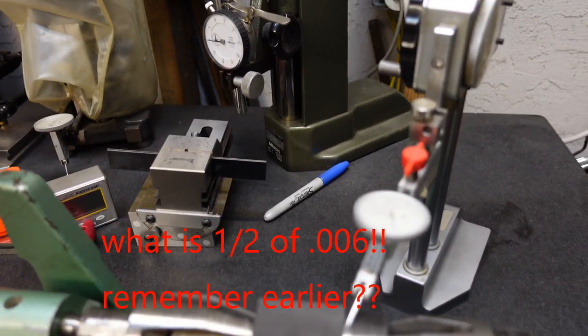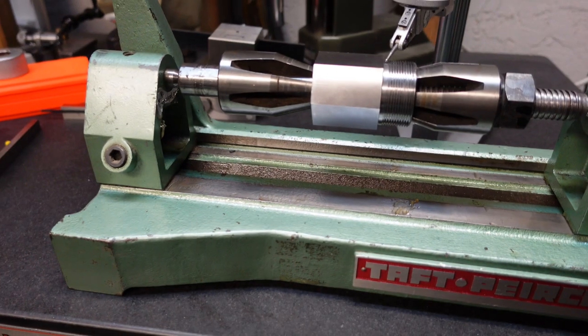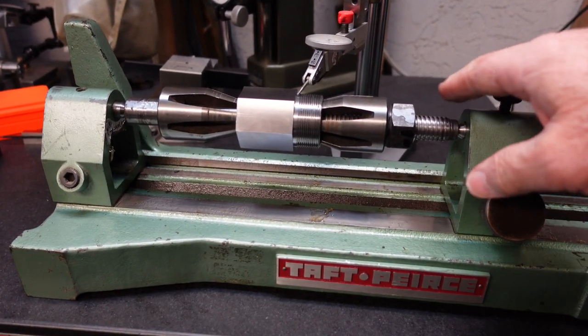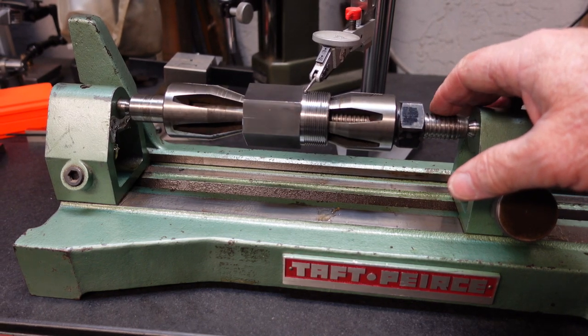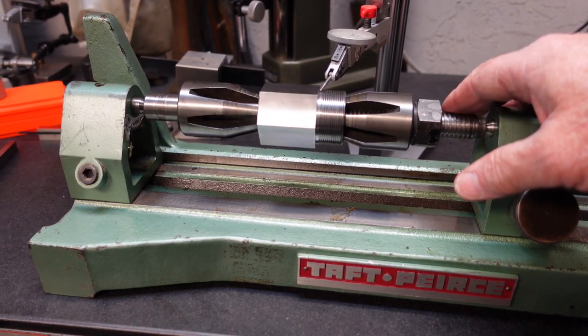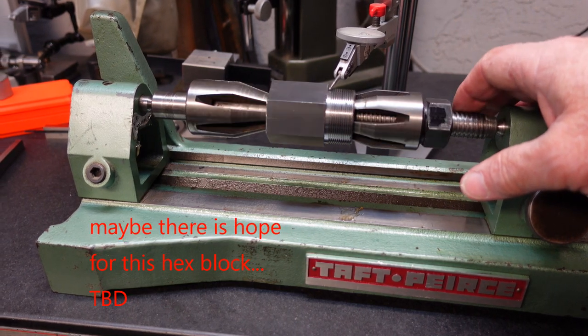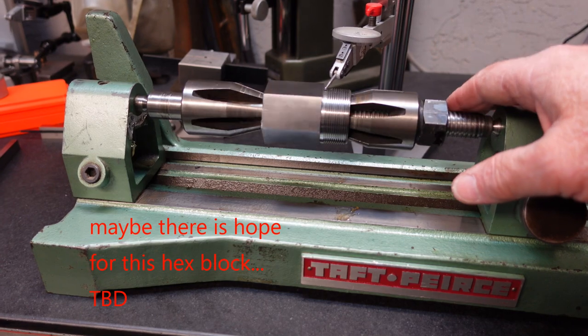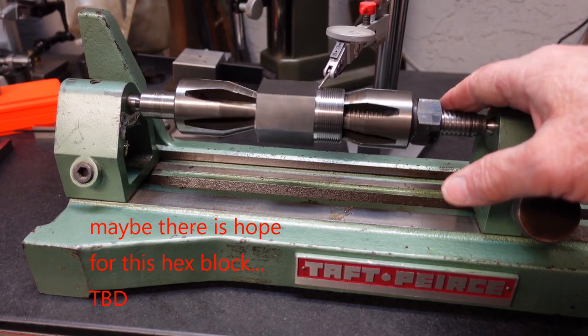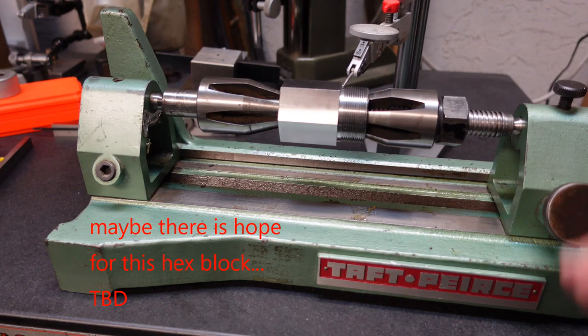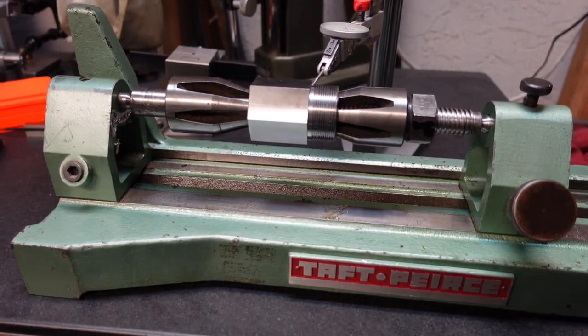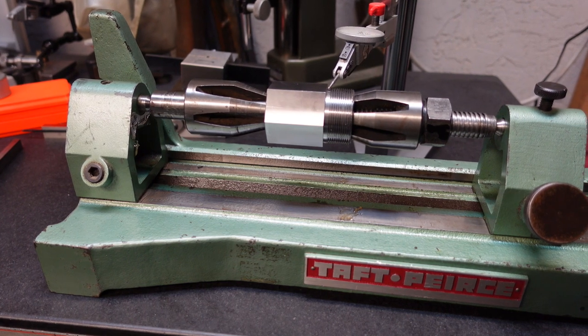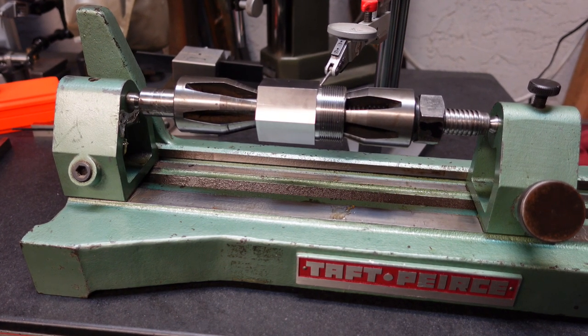Well, just for the fun of it, I put the six sided block on there. And this has only got just a tad over a thou, maybe a thou and a couple of tenths run out on that same location that we tried the square block. Again, I don't know what this is telling me, but I thought I'd show it. Continue on trying to figure out what's straight and what's not.